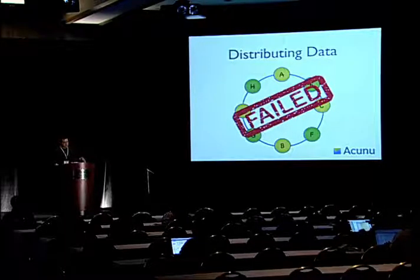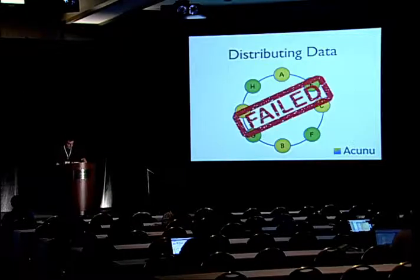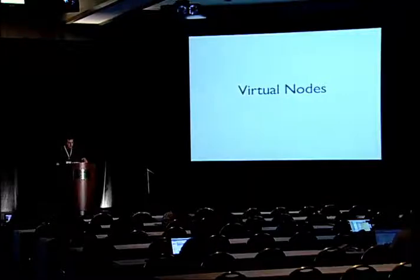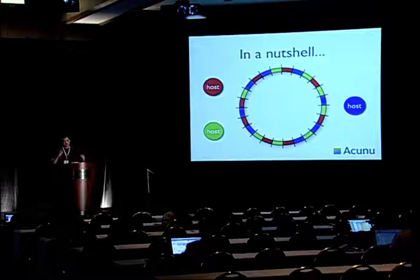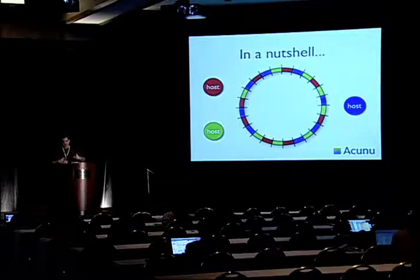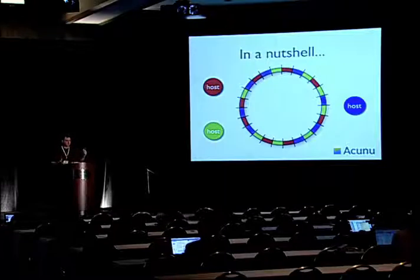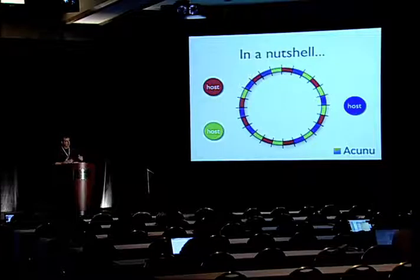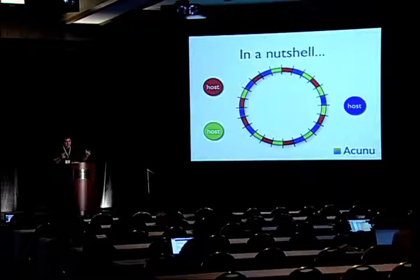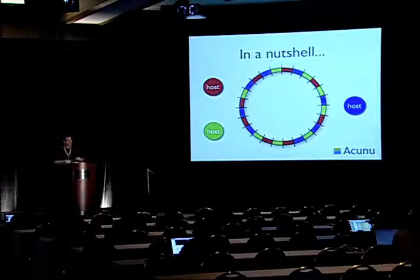So the topic of this talk is virtual nodes. The solution is virtual nodes. In a nutshell, virtual nodes breaks that one-to-one relationship between a host and a token. We're still going to divide the ring into some number of partitions, but it'll be more than the number of nodes we have. And then we're going to randomly distribute these partitions to the nodes we have, so that each node has more than one and they're not contiguous.